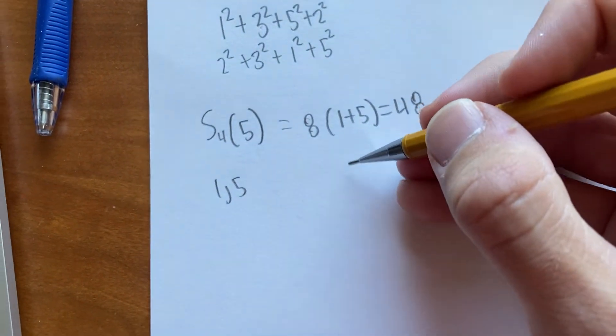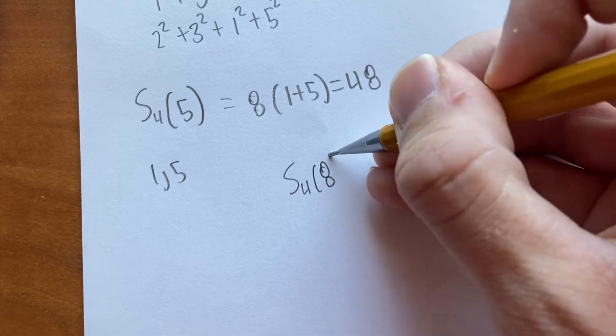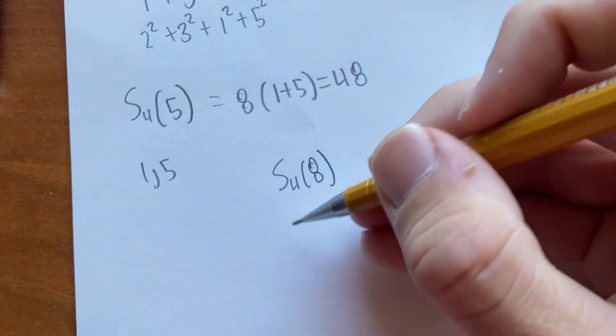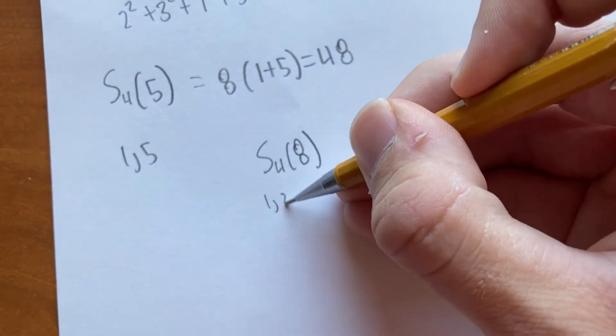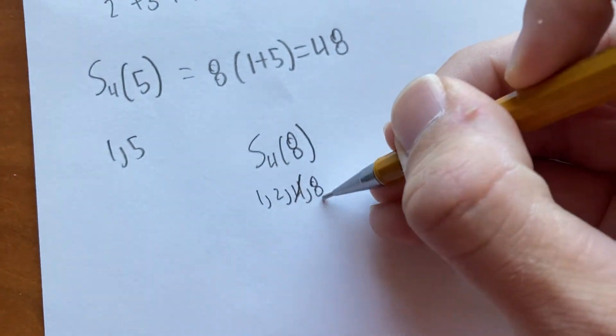And we could also do a different number like eight, for example. If we wanted to take S4 of eight, what we could do is, well, what are the divisors of eight? One, two, four, and eight. But remember, we do not count divisors that are multiples of four.